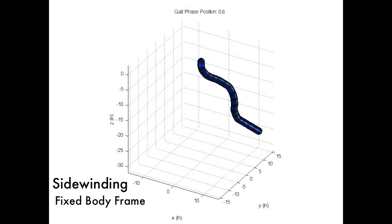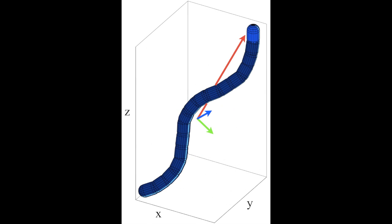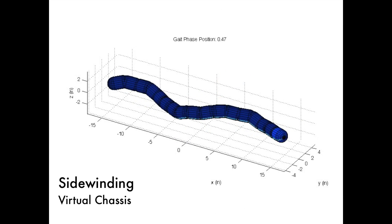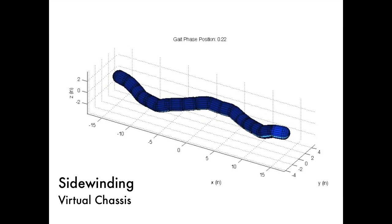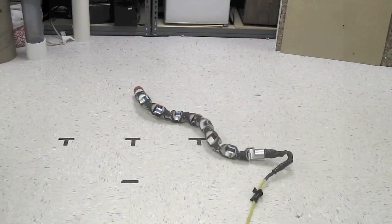For example, this is the same sidewinding motion viewed from the perspective of the head module. However, if we instead define a body frame to be aligned with the overall shape of the snake, as defined by the center of mass and principal moments of inertia, we can achieve a body frame that effectively separates internal shape changes from external motion.